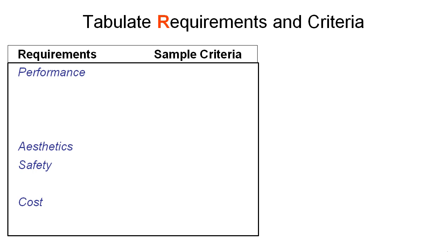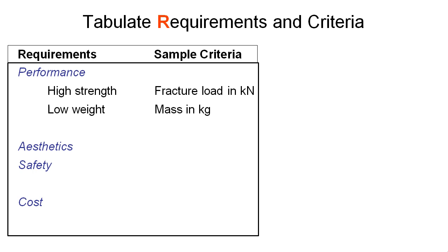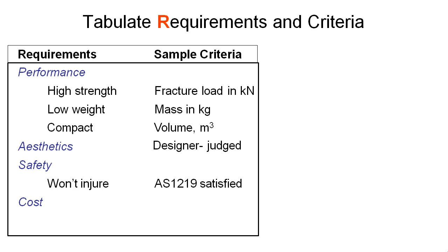To do this we generally tabulate our requirements and also these criteria. Taking some generic ones for the time being, let's look at performance. That might include things like high strength and a sample criteria might be fracture load in kilonewtons. If we had low weight as a performance requirement we could measure that in terms of mass in kilograms. We may have a requirement that our design is compact in which case the sample criteria would be the volume of the device in meters cubed. For aesthetics we might want to bring in some designers to judge whether we've done a good job on how the product looks. For safety there are a range of standards that we might like to draw upon to prove that our device is actually safe for the marketplace. And finally cost, that's generally pretty easy. We typically measure that in terms of manufacturing costs or maybe even retail costs of our product.